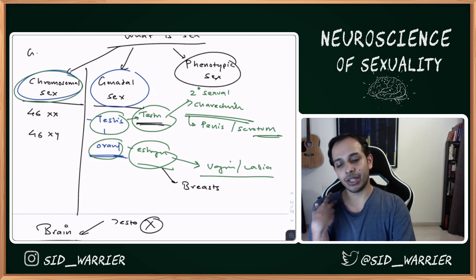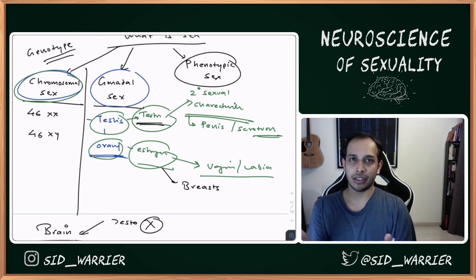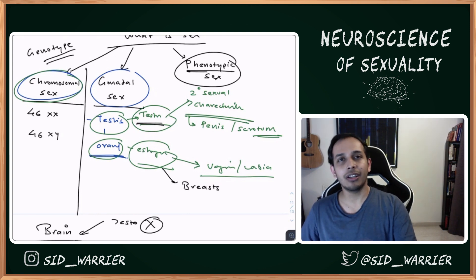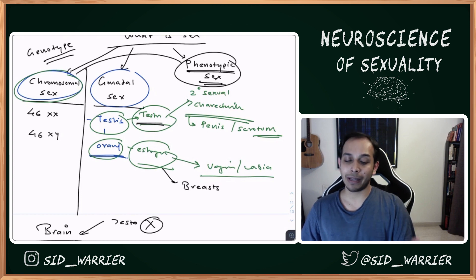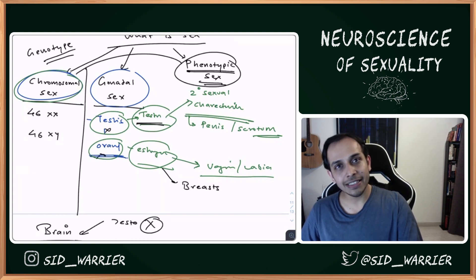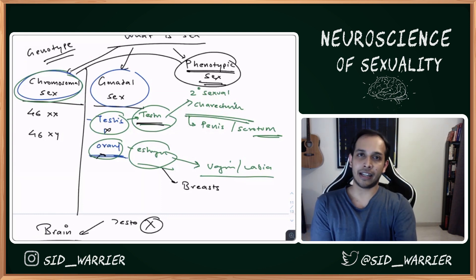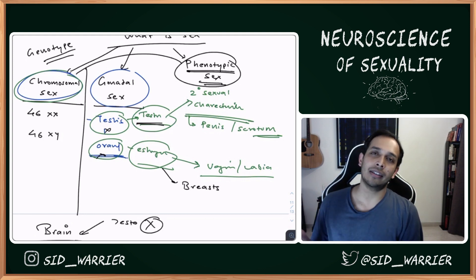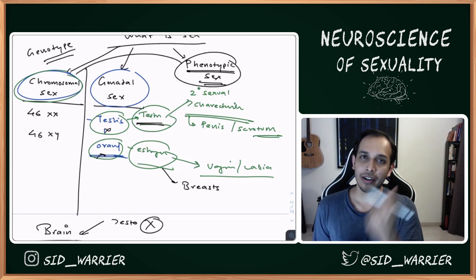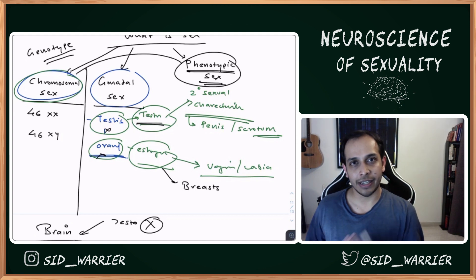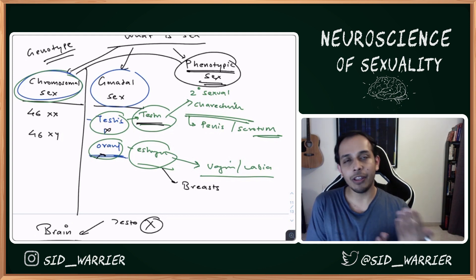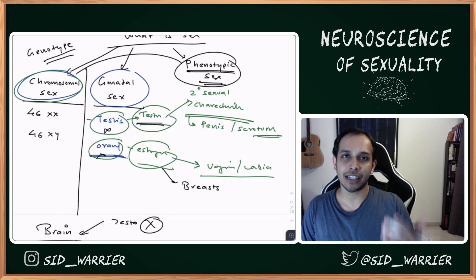There are two words: genotype, meaning the gene, and phenotype, meaning all the things you can see as a result of the gene. You can ask: do you mean phenotypic sex? You can't see the testes or ovaries, but you can see the external genitalia. You pick up the child, see a penis and scrotum — that is phenotypic sex indicating male. An ultrasound showing a uterus and ovaries inside is phenotypically female. These are all secondary sexual characteristics.